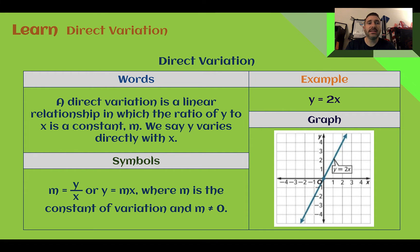A direct variation is a linear relationship where the ratio of y to x is constant, and we call that m. We might say that y varies directly with x. In symbols, since m is our constant of variation, we can use it as y over x, or we might see it in the equation y equals mx, with m being our constant of variation, also known as our slope.